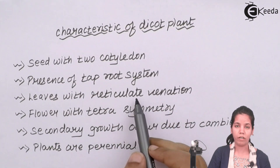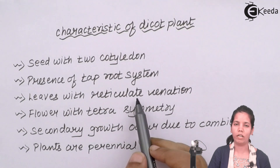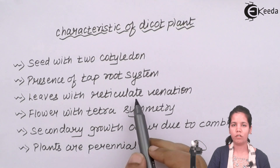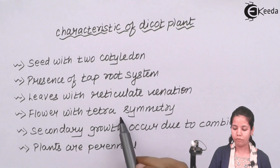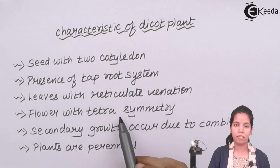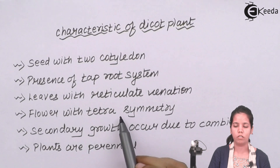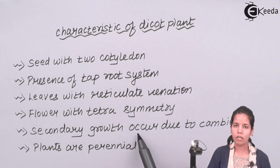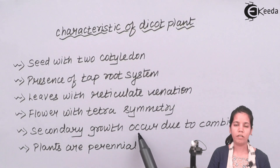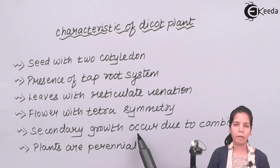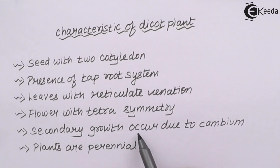Leaves generally have reticulate venation, or you can say irregular venation, as compared to parallel venation which is straight. The flowers are basically of tetramerous symmetry or they are pentamerous in nature. Secondary growth occurs due to cambium. The secondary growth is nothing but the stem region or the base region which makes the plant thick, and whenever you cut a plant, the whitish or skin-colored region of the wood is nothing but cambium, which originates from the meristematic region.